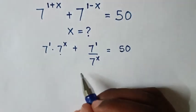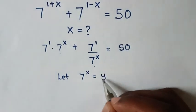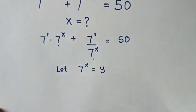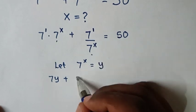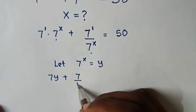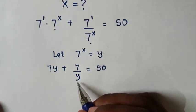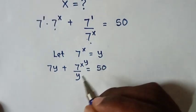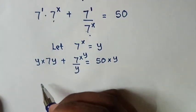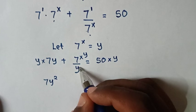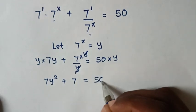Since 7^x is common, we let y = 7^x and substitute. The equation becomes 7y + 7/y = 50. To remove the fraction, we multiply both sides by y, giving 7y² + 7 = 50y.